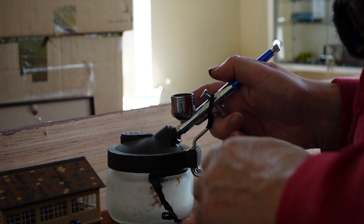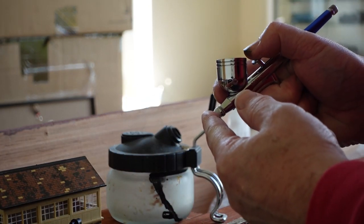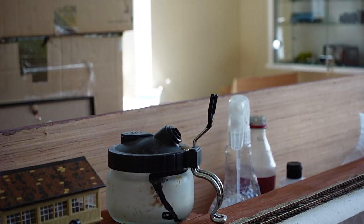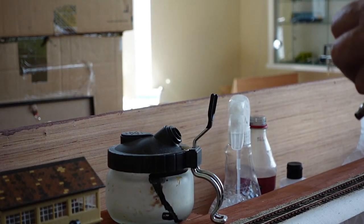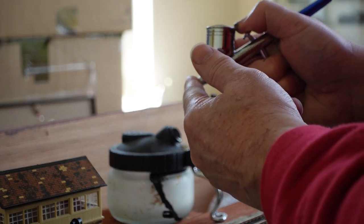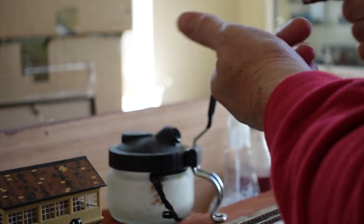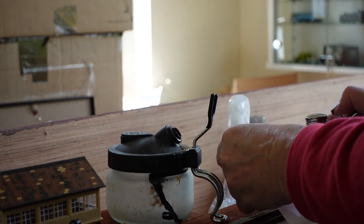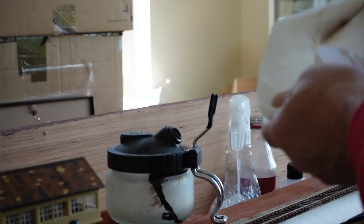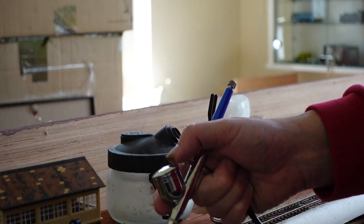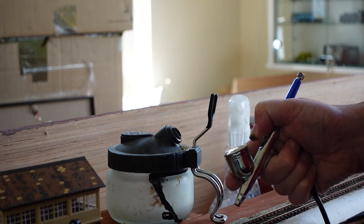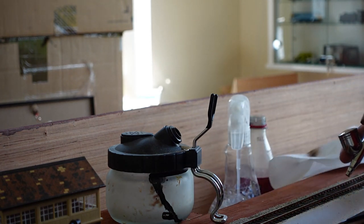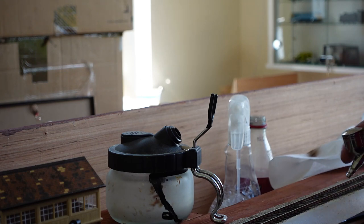Before we do anything, we want to make sure everything's working. A bit of paper just to check your spray pattern on—how it's coming out. Now you can see how it's coming out on there. This camera is not liking the focus at the moment. So now it's a matter of just gently coming down, keeping a couple centimeters away, and just keep it moving. Going along, up and down.